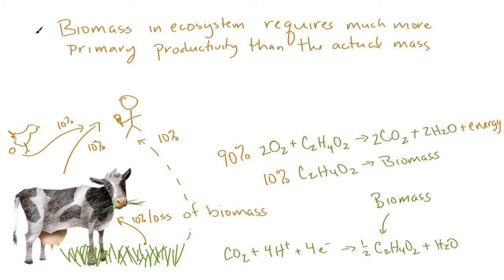And the other thing, so it really needs lots of primary productivity. And the second thing is that the more times things are eaten, the more trophic levels, and trophic levels are the number of times things are consumed, so the number of times you go from grass to cows to people, the more trophic levels requires more primary productivity.